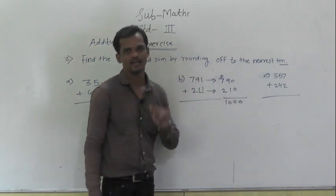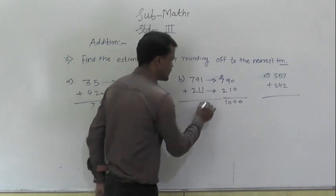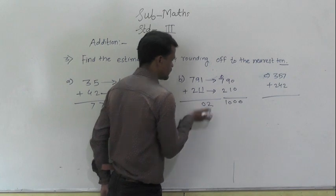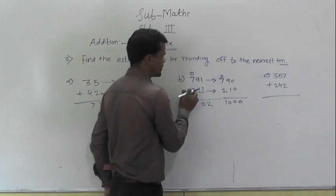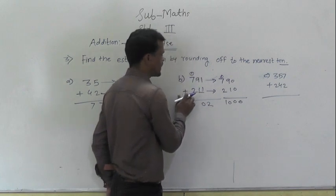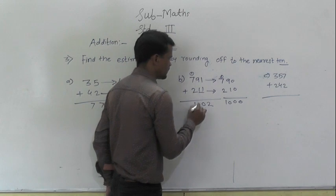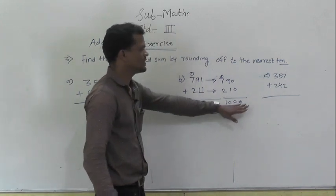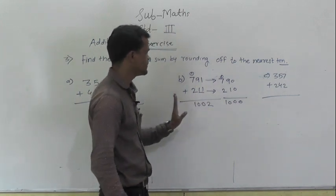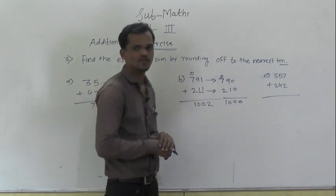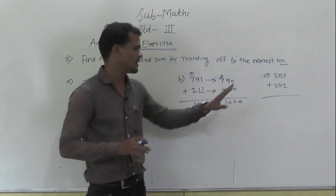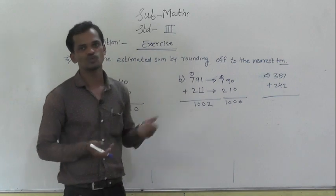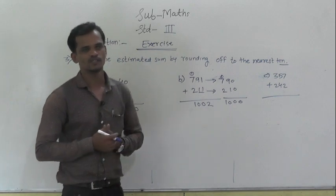Now the actual sum: 1 plus 1 is 2, 9 plus 1 is 10 carry 1, 7 plus 2 plus 1 carry is 10 carry 1. The actual sum is 1002. The estimated sum is 1000, meaning the estimated sum is nearest to the actual sum.